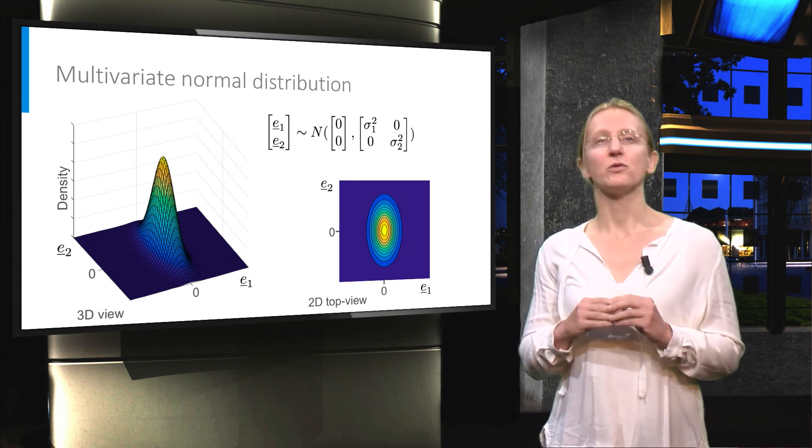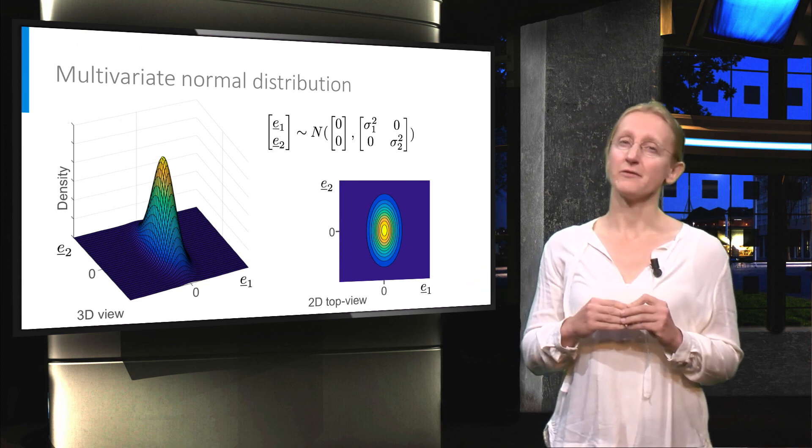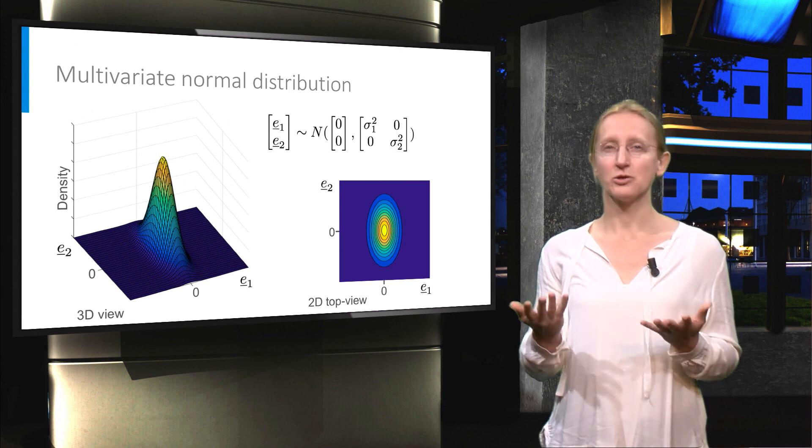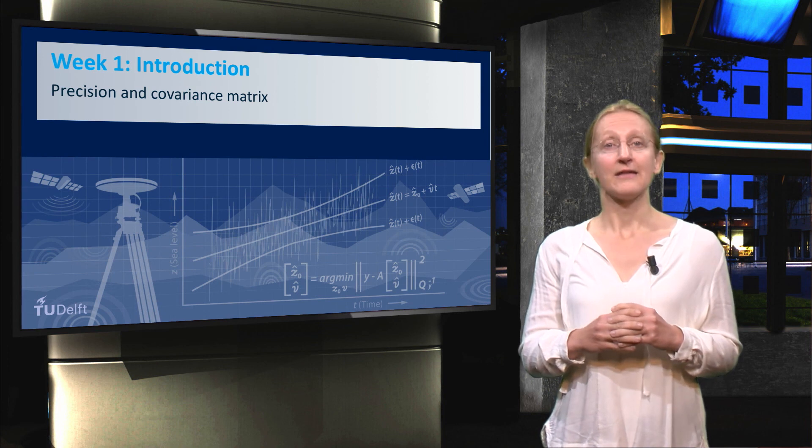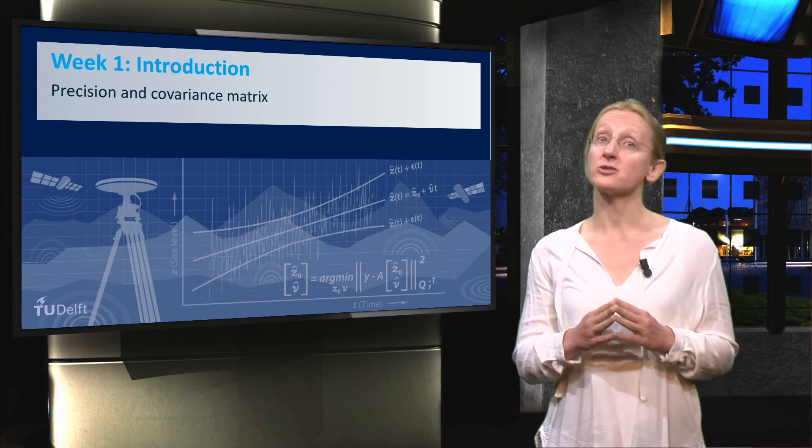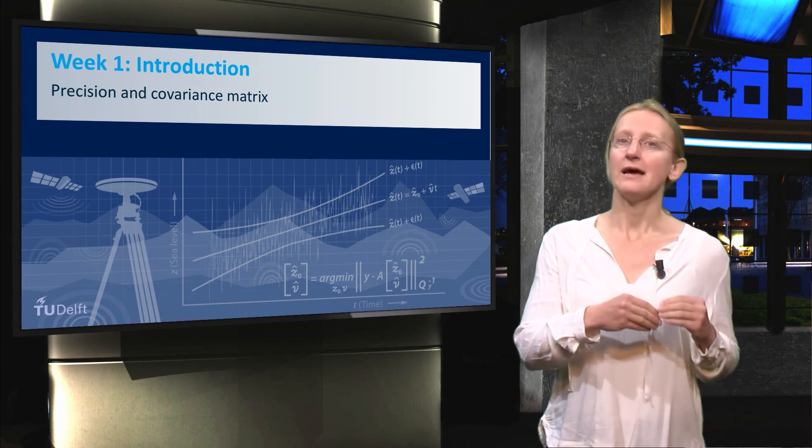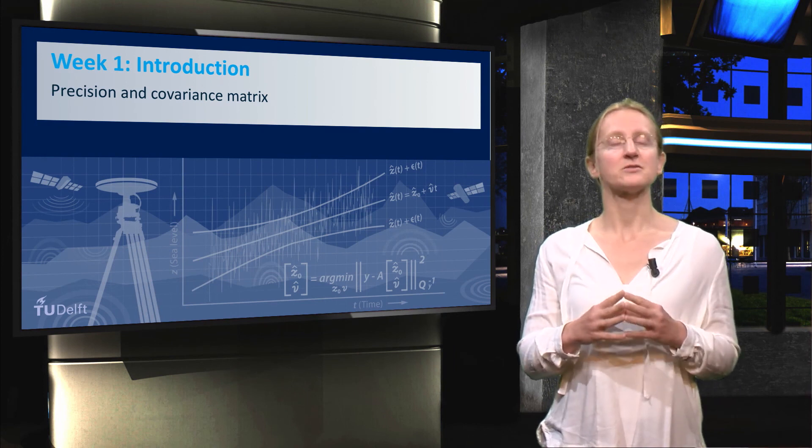In the exercises you will look at different examples of covariance matrices and the multivariate normal PDF for the two-dimensional case. And then in the next lecture we will go back to our estimation problem and identify the different elements of this problem.